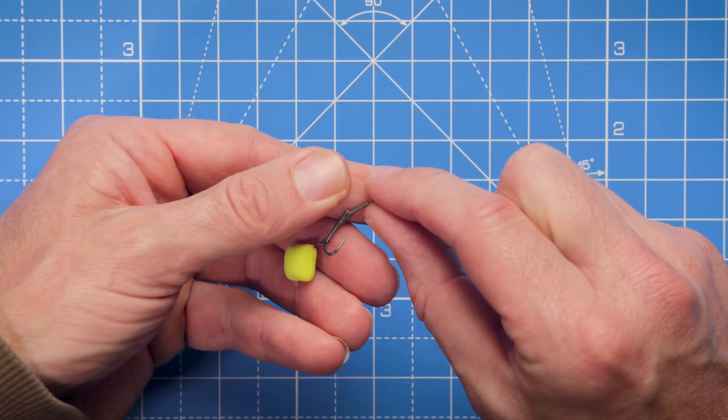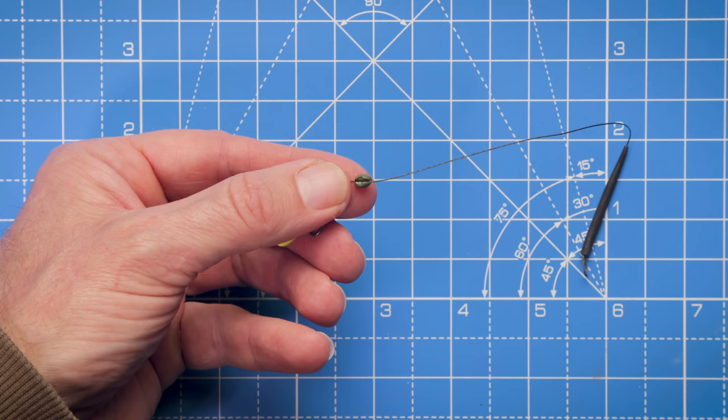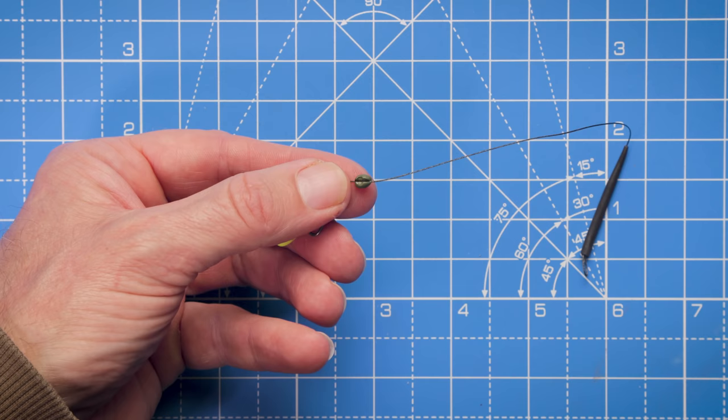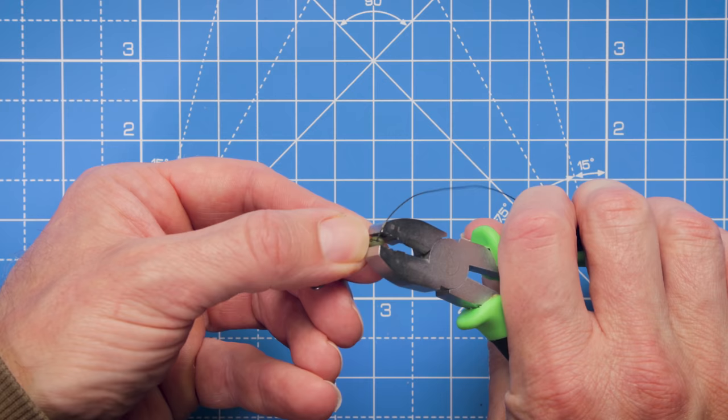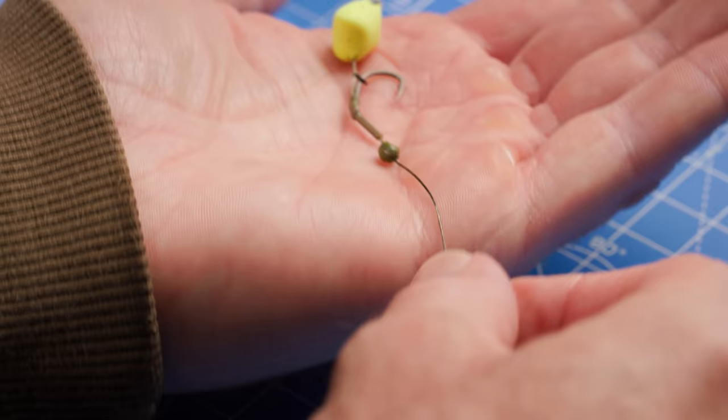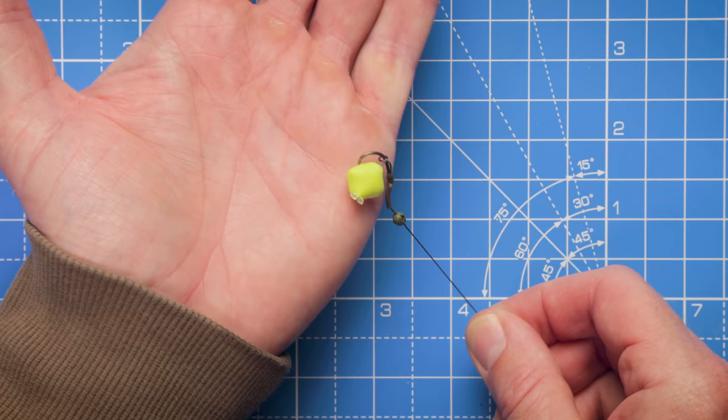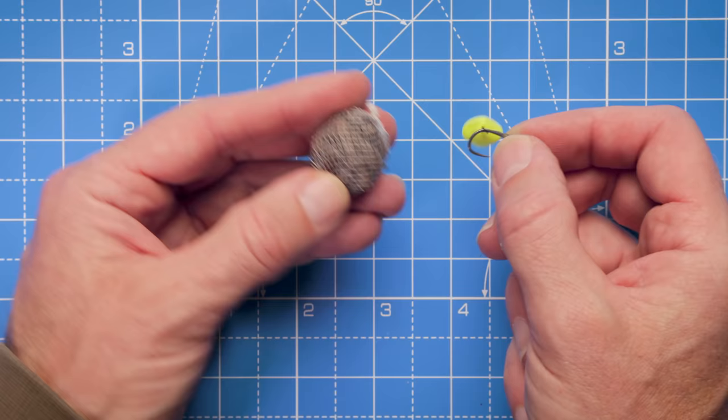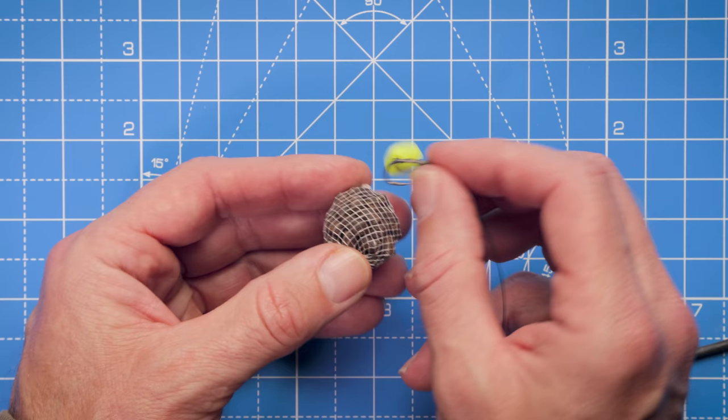Now we just need to add our split shot. This is a number two shot—it's perfect for these quads. Just going to place that on the hook link just underneath the shrink tube, just take some pliers to squeeze that down. The rig is now complete. As you can see, as I run the rig across my hand, that shrink tube helps the hook point turn aggressively to prick hold every time.